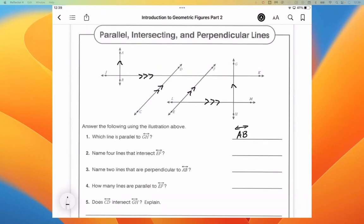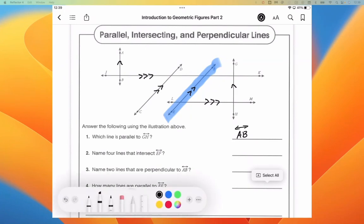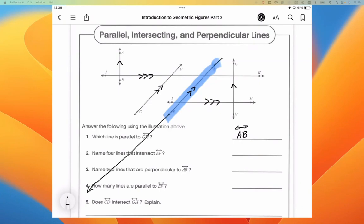Name four lines that intersect EF. So EF, we see it there. I'm going to highlight it, so it's easier for me to kind of see what's going on. We're going to name four lines that intersect EF. Now, it's important for us to remember that EF does not stop where it currently is. EF continues down this way forever, and up this way forever.